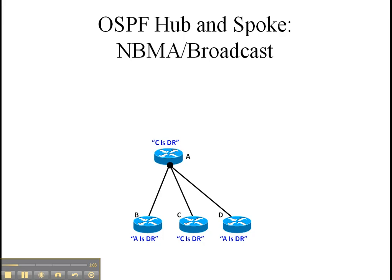Anyone know why A is saying C is the DR? Well, when you run the DR election algorithm, you elect the highest router ID between the two. Whoever has the highest router ID will become the DR. So in this case, A has the higher router ID compared to B and D, but C has a higher router ID than A. So if you leave everything as default, then C will be the DR.